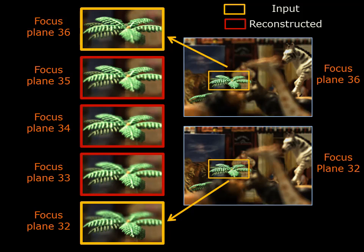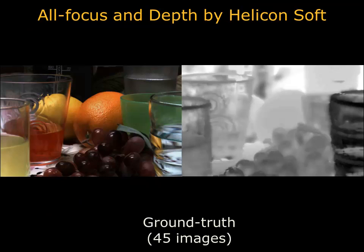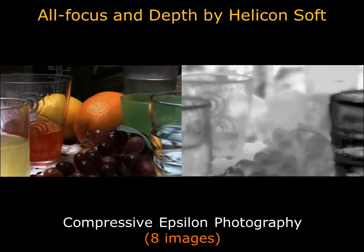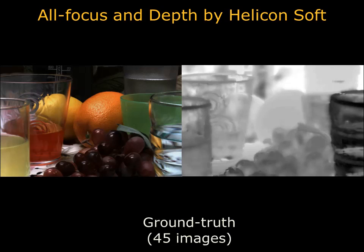Next, we capture a 45-image ground truth focus stack and use Helicon Focus to generate an all-in-focus image and depth map. We then use only 8 input images in our compressive Epsilon framework to reconstruct a 45-image focus stack. We run this through Helicon Focus and generate the all-in-focus image and depth map shown here. Keep in mind that the ground truth requires almost 6 times as many images. For comparison, we also show an all-in-focus image created from a spline-interpolated focus stack.